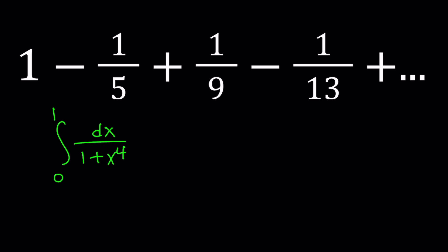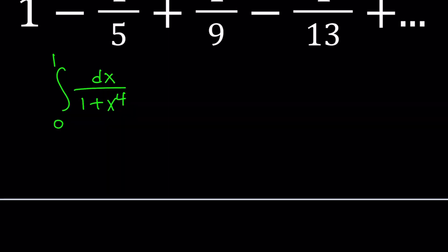Why does this have to be from 0 to 1? Because we need a numerical answer, and our sum is very closely associated with this integral, which you will see in a little bit. So when you see something like 1/(1 + x^4), especially when x is between 0 and 1, aren't you thinking the infinite geometric series?